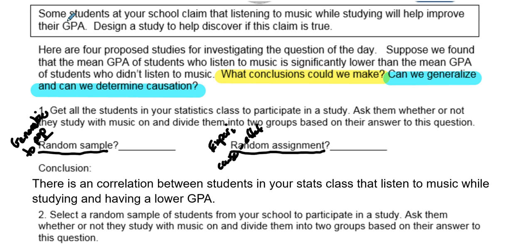We're going to go through an example of experimentation where students claim that listening to music while studying will help improve their GPA. Here are four proposed studies to investigate this question. Suppose we found that the mean GPA of students who listen to music is significantly lower than the GPA of students who didn't listen to music while studying. What conclusion can we draw, what generalizations can we make, and is there any causation?